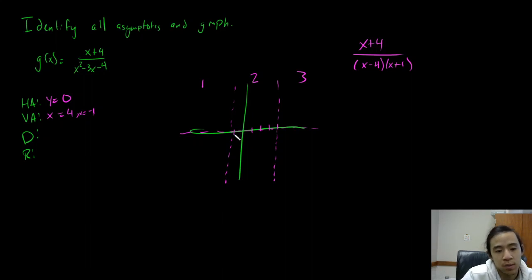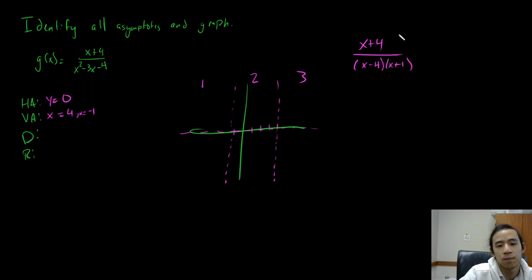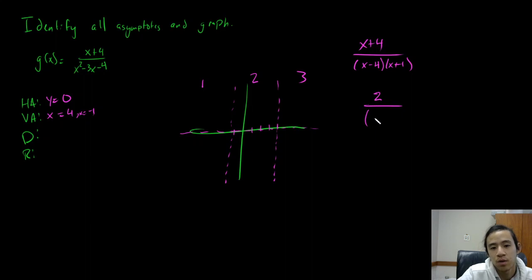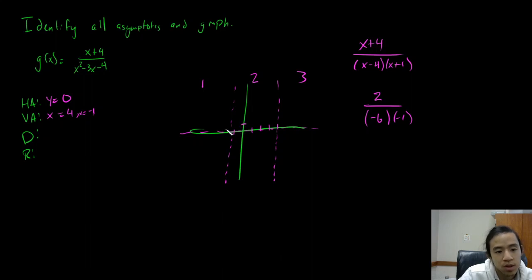In region 1, that's anything less than negative 1, so let's plug in negative 2. Plugging negative 2 into our expression, we get negative 2 plus 4, which is 2 on top, over negative 6 times negative 1, giving us positive 1 third. So 1 third is right here, and we're just going to follow the asymptotes kind of like this.